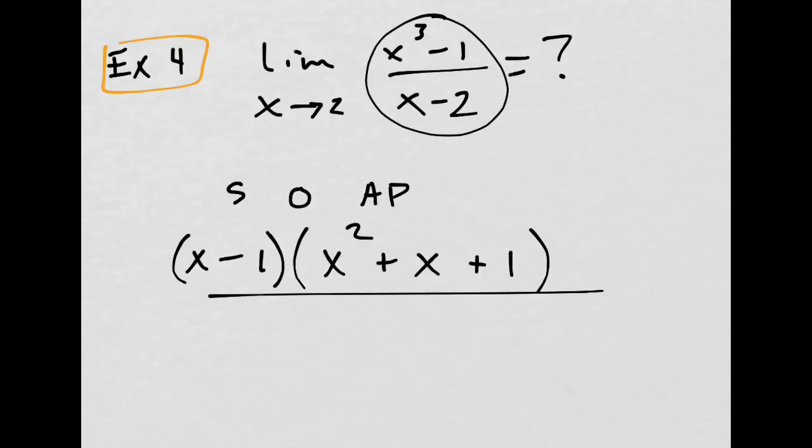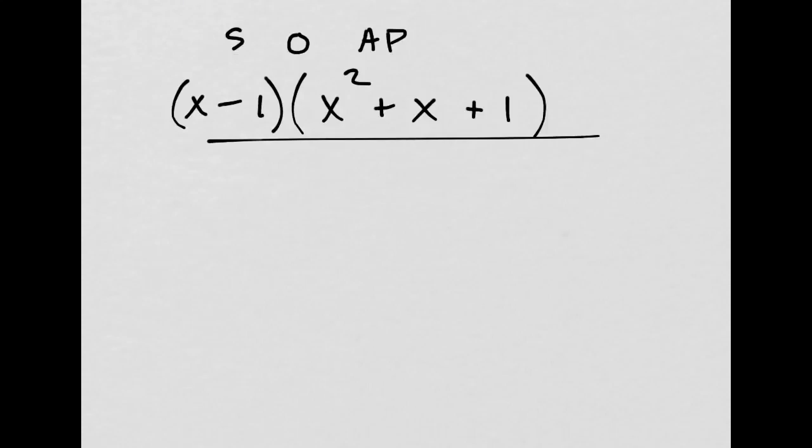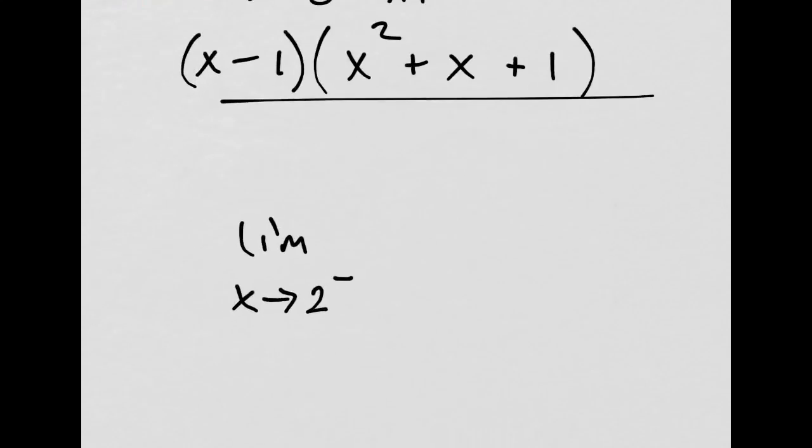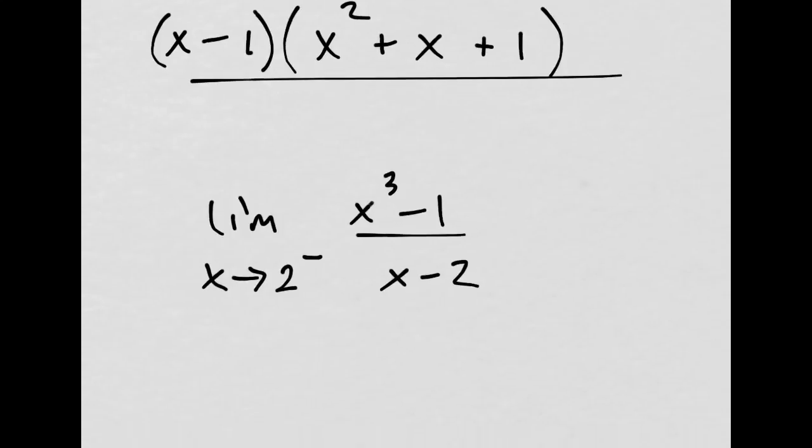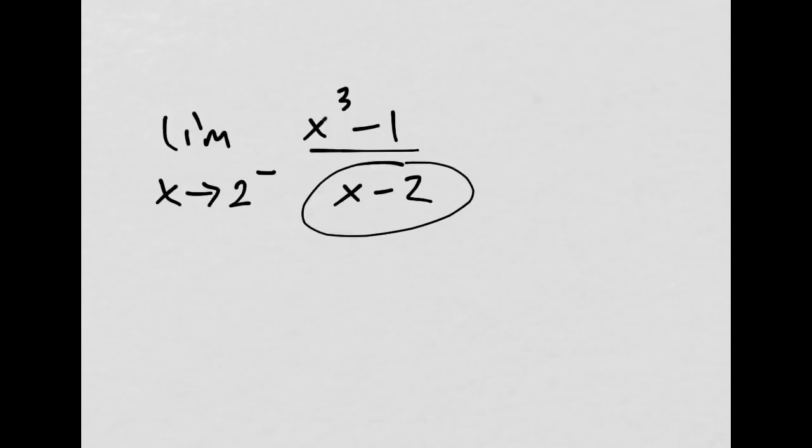So, anytime something in your function is going to 0, it's a good idea to check the two-sided limit. If I did the limit as x approaches 2 from the left side, x cubed minus 1 over x minus 2. This is approaching 0. If I have something that's smaller than 2, subtracting 2, that gives me a negative. Like, if I have 1.9 minus 2, that's negative 0.1. So, this actually becomes negative.